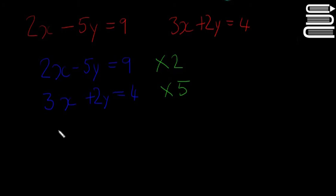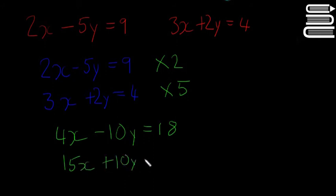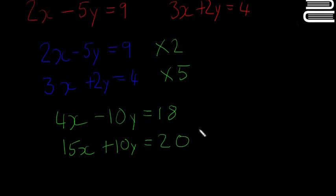So I'm going to go down and write that here. You have to multiply everything in the line, not just the y. So everything in this whole equation by 2. So it's going to be 4x minus 10y is equal to 18. And then in the bottom one here, it's going to be 15x plus 10y is equal to 20.